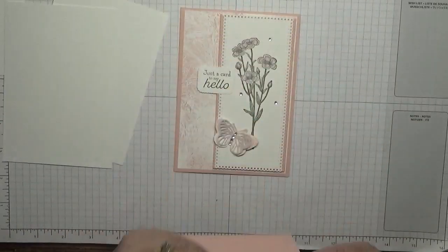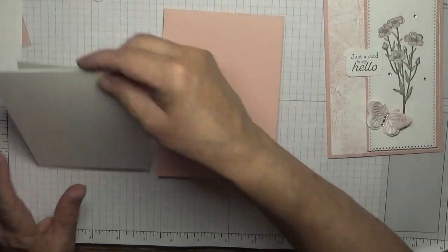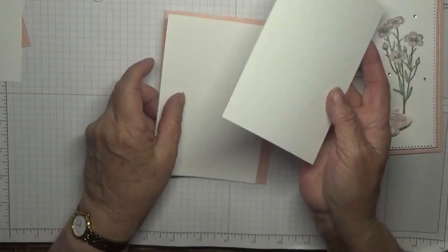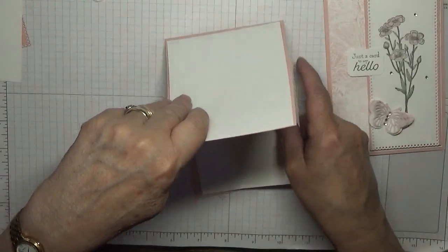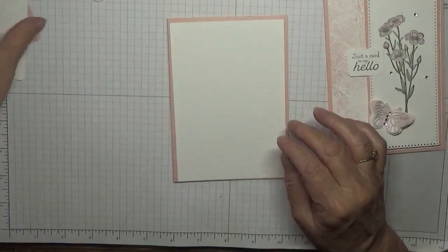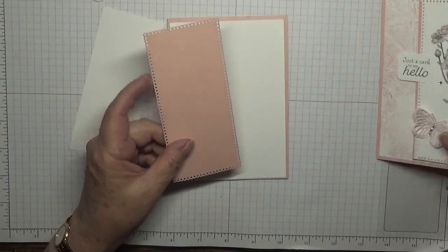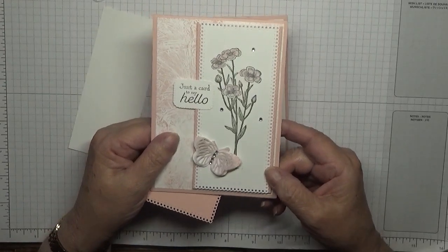I have got card bases. I've got a Blushing Bride card base of eleven and three quarters by four and one eighth scored at five and seven eighths. I have two pieces of white cardstock, both of them at five and five eighths by three and seven eighths, one for the inside and one for the outside.